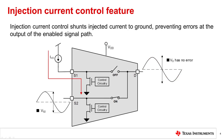To avoid the complications of added external protection to your system, some switches have internal injection current control that protects your system and ensures a stable output signal. When the internal circuitry detects a voltage above supply at a disabled signal path, the control circuitry for that particular pin is enabled. The injection current control circuitry is independently controlled for each source or drain pin, and this internal circuitry shunts the injected current to ground, protecting the supply rail and enabled signal path.